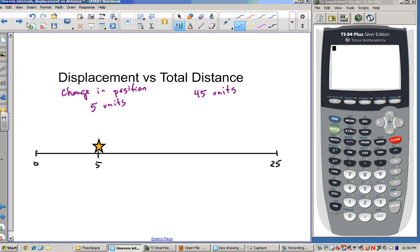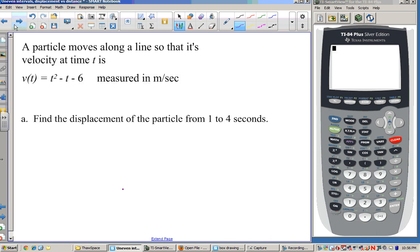All right, so let's try this out with some problems dealing with our particles, much like our star, that move along a line. And in this case, we're given the function v(t) equals t squared minus t minus 6, and we're asked to find the displacement, or the change in position. Now, you'll recall from before, we learned that the integral of a velocity function gives change in position.